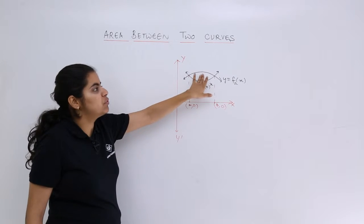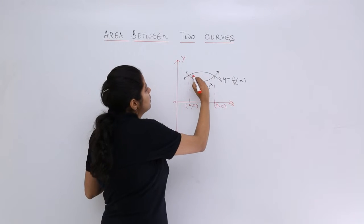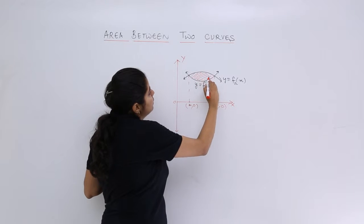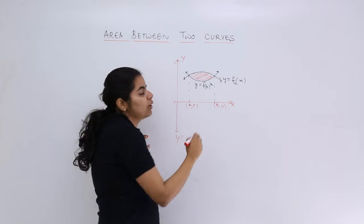Now what I have to do is find out the area between these two curves. This shaded area is the area between the two curves. How to find this out?